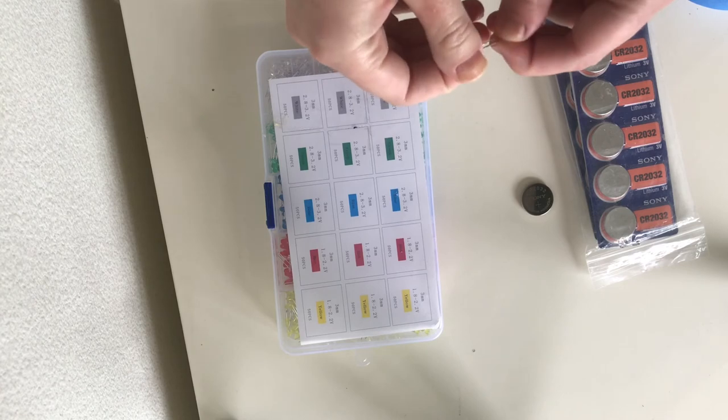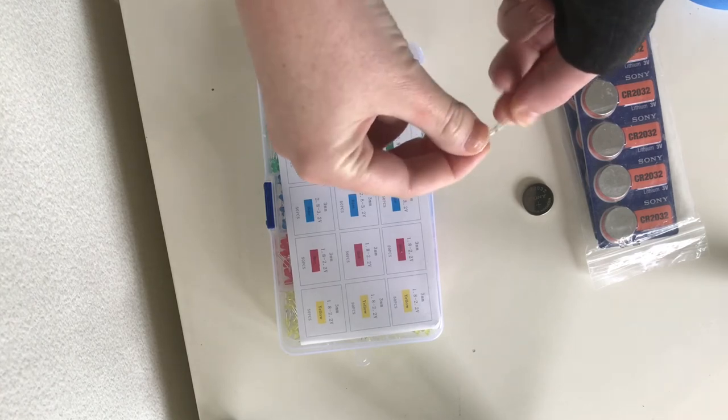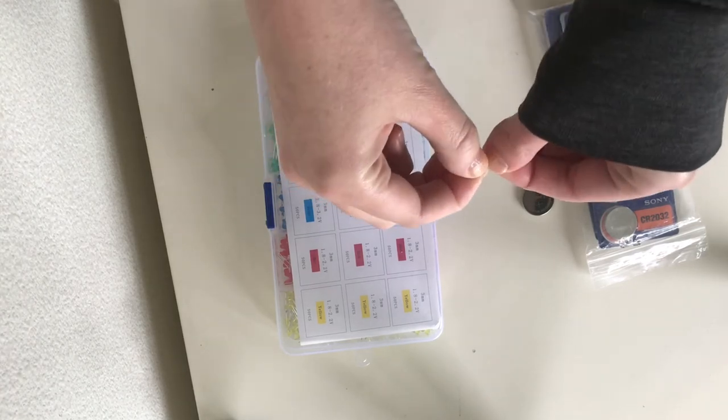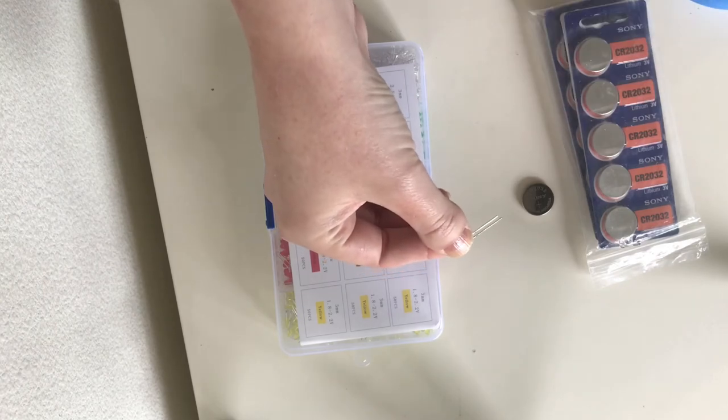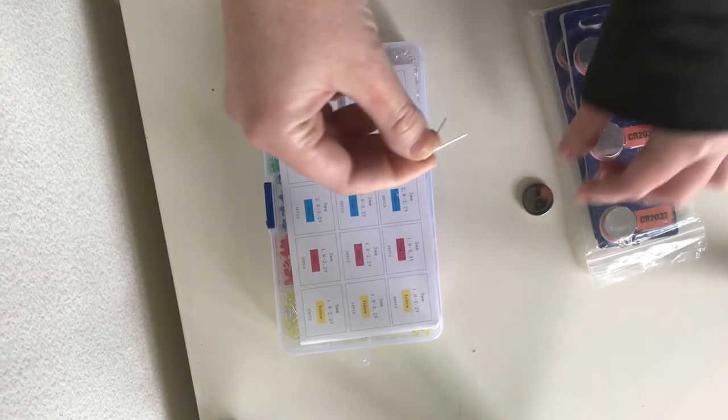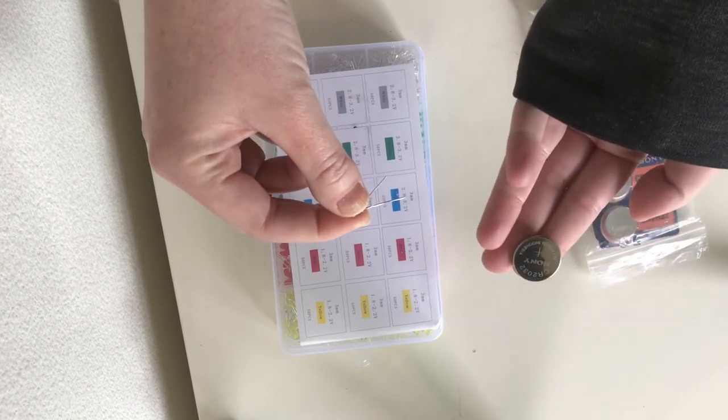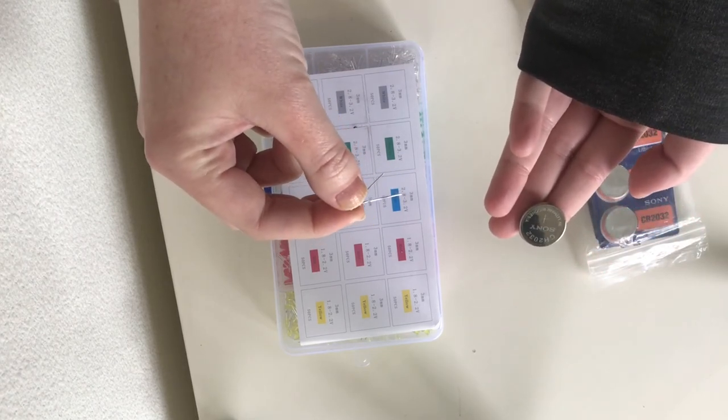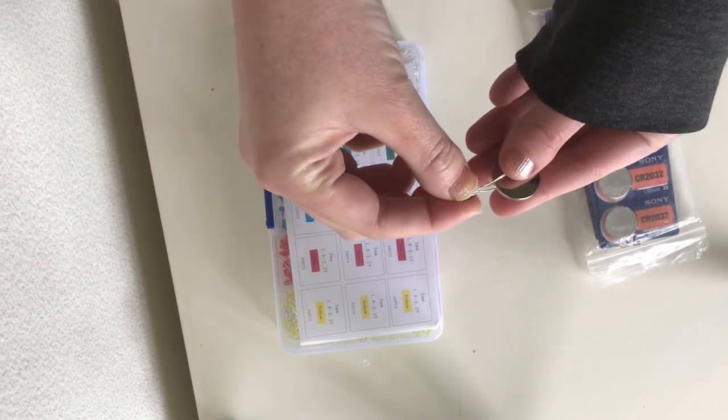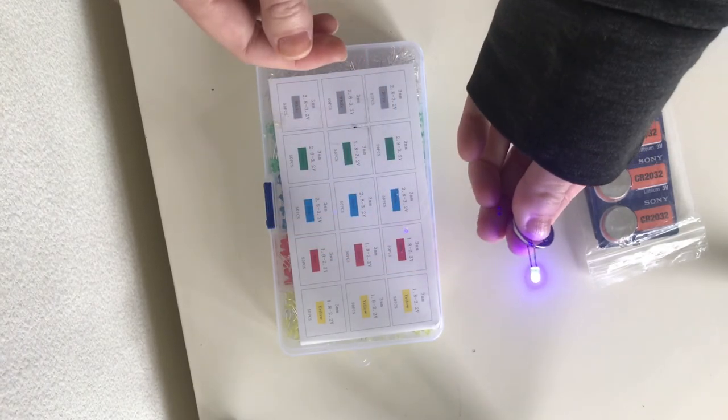So now on my LED light, one of the legs is longer than the other one. And that longer leg is the positive side. So I want to touch that positive side to the positive side of my battery. You can see my battery has that plus sign there for positive. And when I touch those, and then I touch the two negative sides together, I turn my light on.